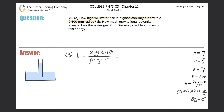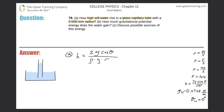We have everything we need — we just have to look up the constants. I chose to use the surface tension of water at 20 degrees Celsius. You could use 0 degrees, but 20 is standard. So here we go.